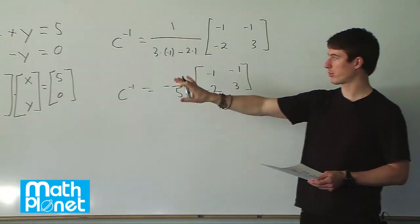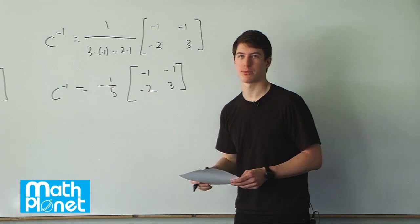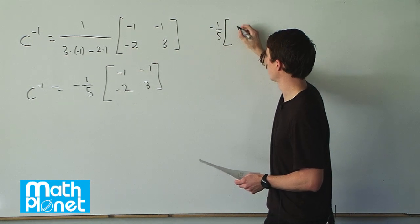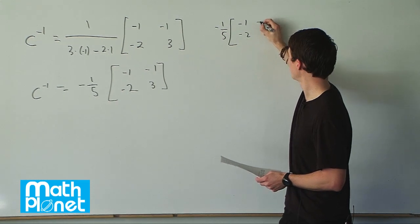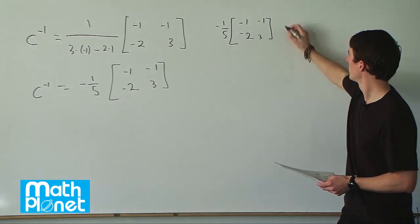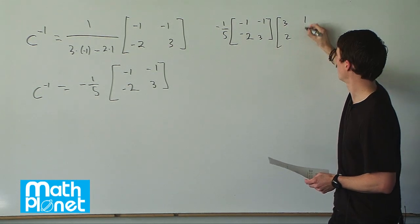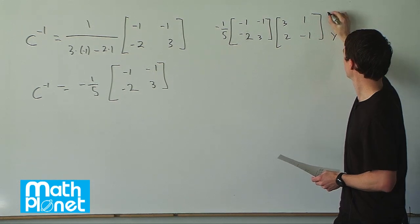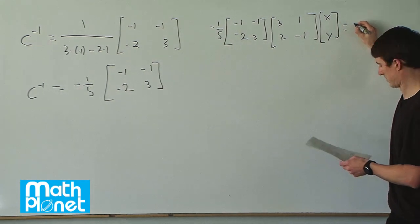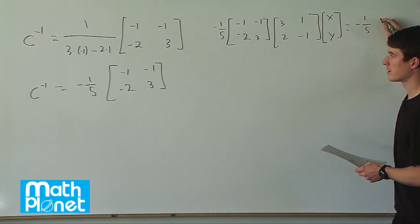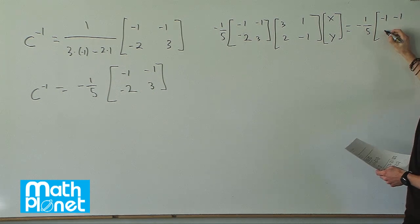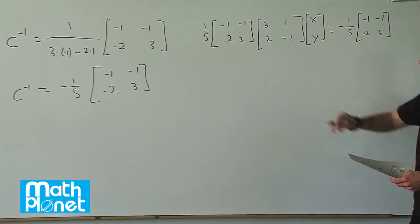We're going to multiply both sides by the coefficient matrix and simplify down to the identity. So let's write the whole thing out: negative one-fifth times the matrix negative 1, negative 2, negative 1, and 3, times the matrix 3, 2, 1, negative 1, and then x and y. On the right-hand side, the coefficient matrix — negative one-fifth times negative 1, negative 1, negative 2, and 3 — times the vector 5 and 0.